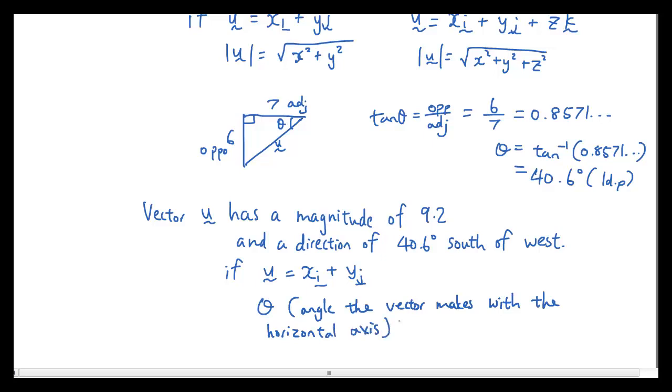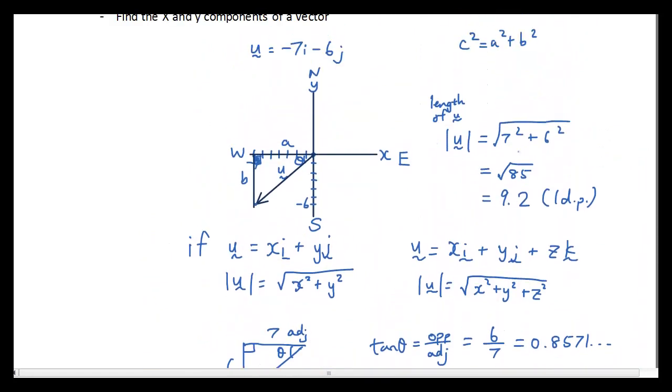The vector makes with the horizontal axis. Now this is very important, because when some people are looking for theta, sometimes, let's say for argument's sake, if we had another vector going this way...